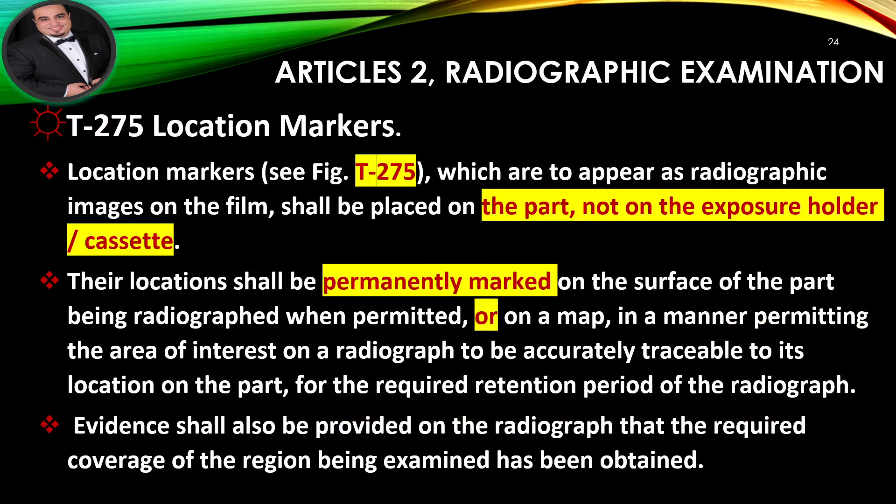Location Markers: Location markers, which are to appear as radiographic images on the film, shall be placed on the part, not on the exposure holder or cassette. Their locations shall be permanently marked on the surface of the part being radiographed when permitted, or on a map, in a manner permitting the area of interest on a radiograph to be accurately traceable to its location on the part for the required retention period. Evidence shall also be provided on the radiograph that the required coverage of the region being examined has been obtained.